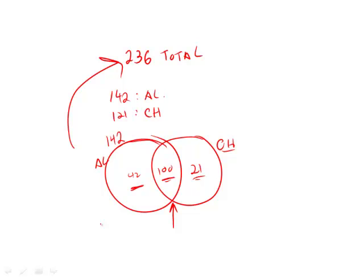42, 21—is there any way for me to increase this? Could I, for instance, put another student from here into the middle? Sure. I could make this 20, and that would give us one more—that would be 101—and this would be 41.